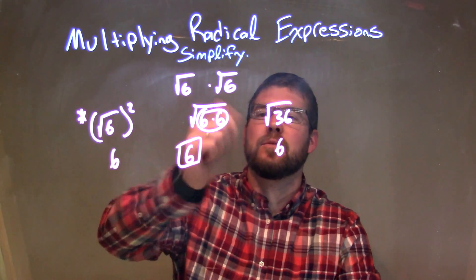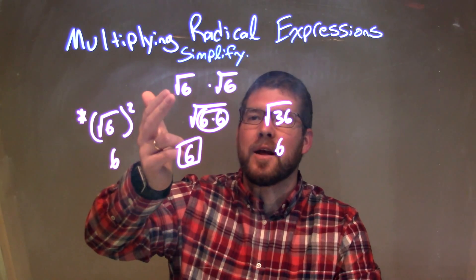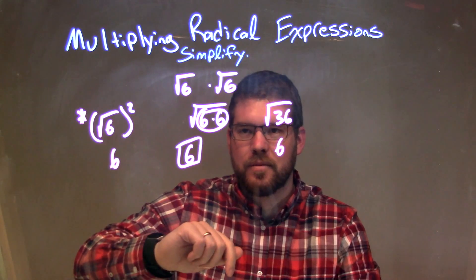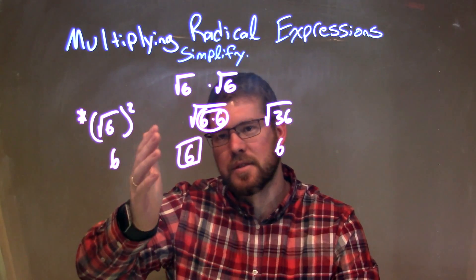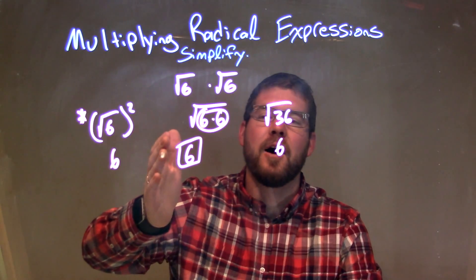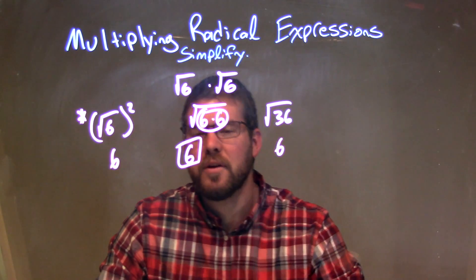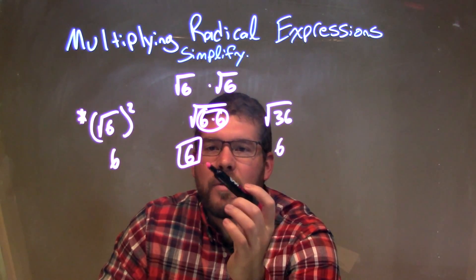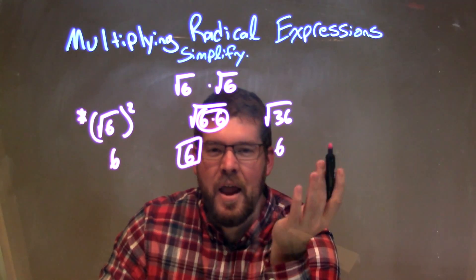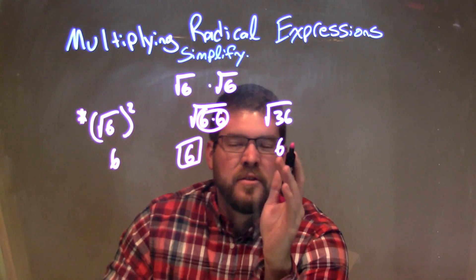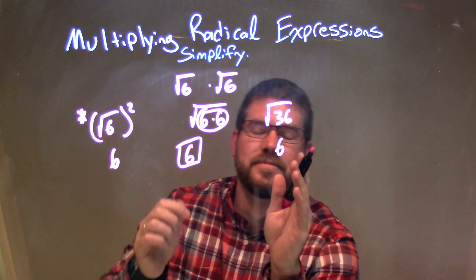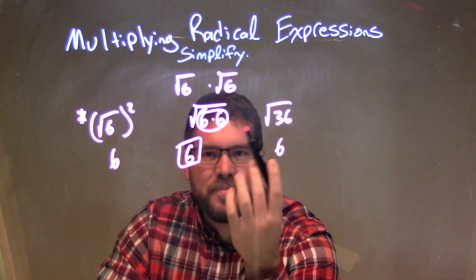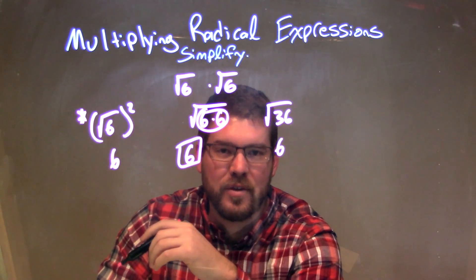Let's recap. We're given the square root of 6 times square root of 6. I combined that underneath one square root to be the square root of 6 times 6. Pulled out my pair right there, so 6 is on the outside. Nothing left on the inside, so it kind of disappears. And so we're left with just a 6 on the outside, and that's our final answer. There are a few other methods we covered to solve it in whatever way is easy for you, but either way, our final answer is just a 6.